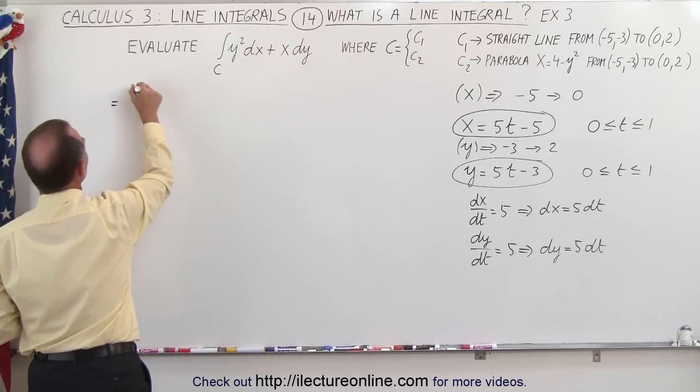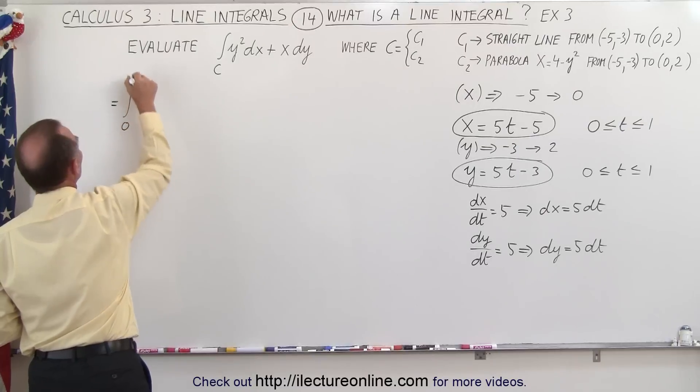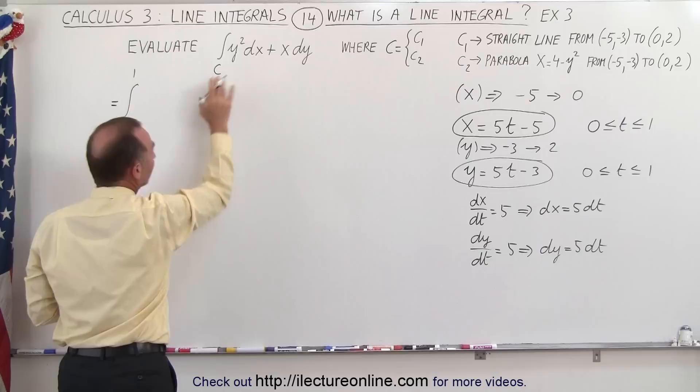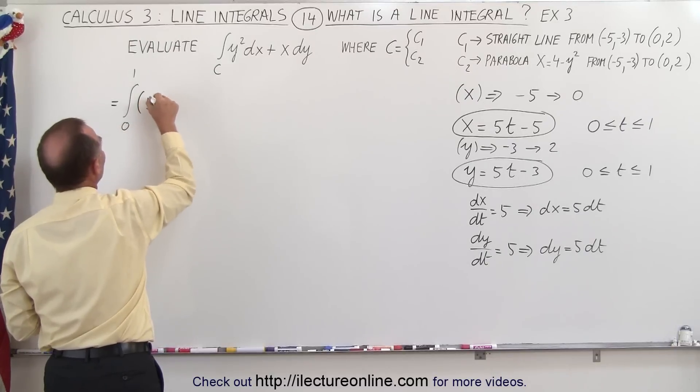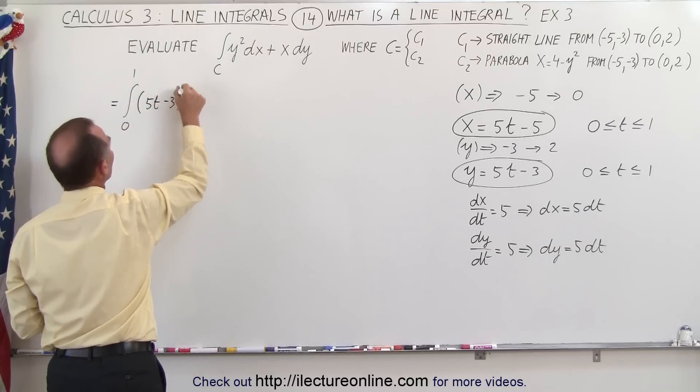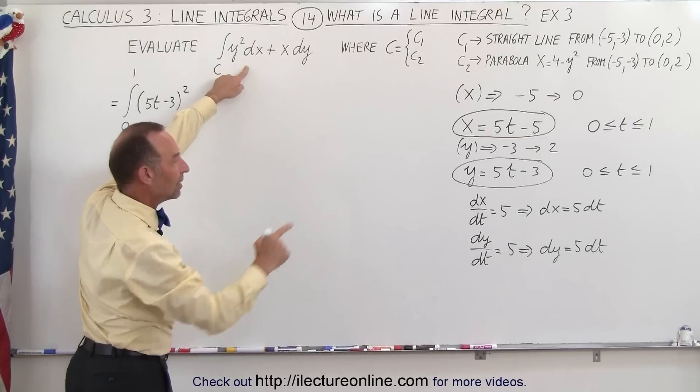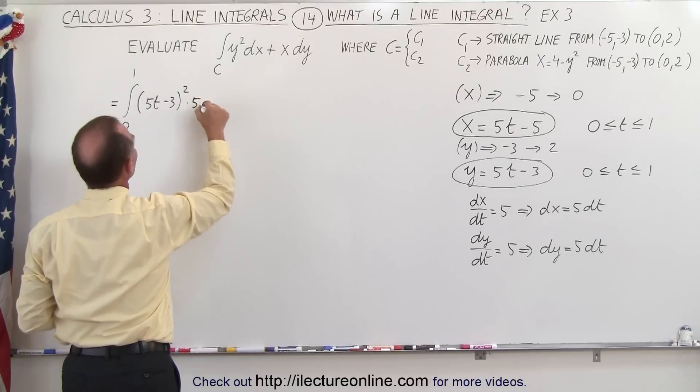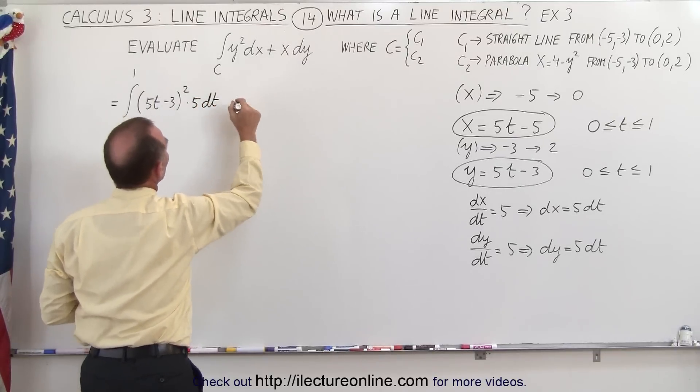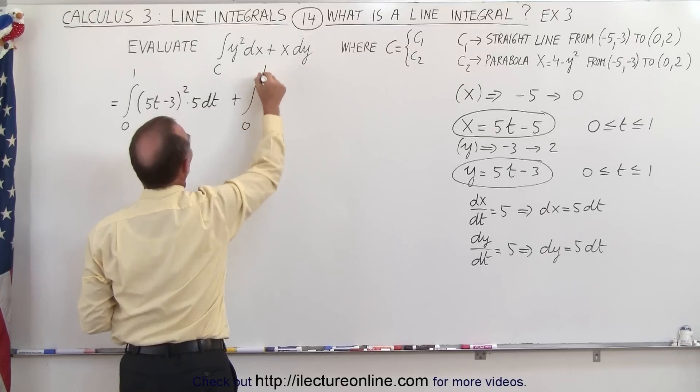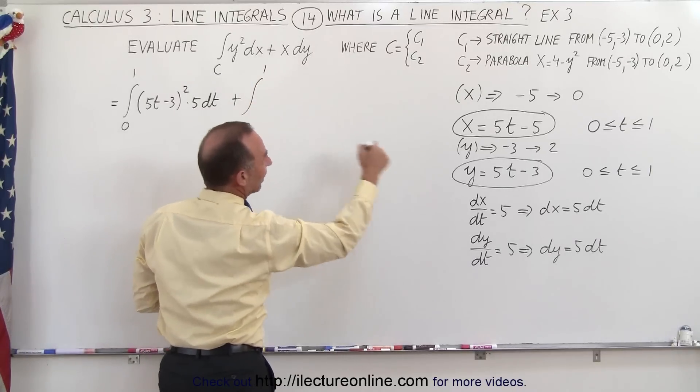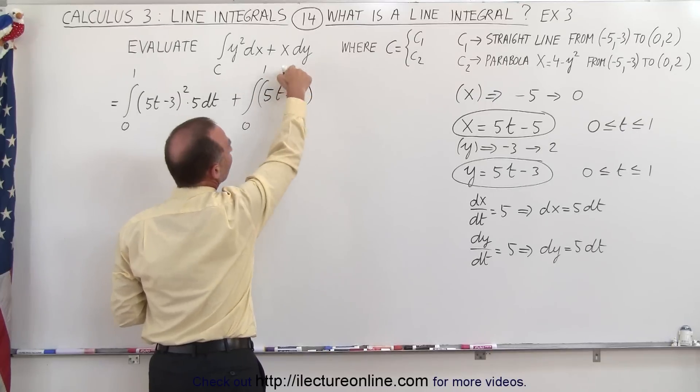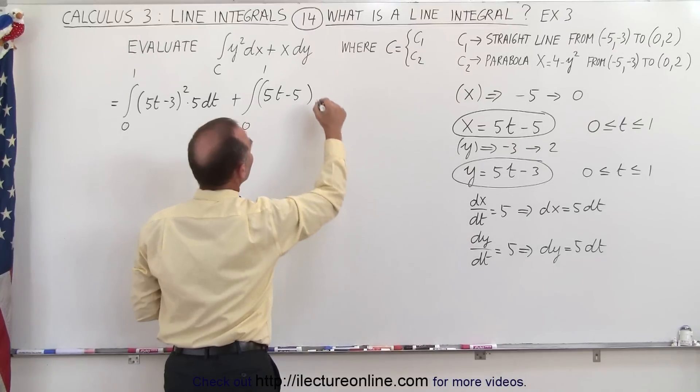So this can now be written as the integral from 0 to 1, because that's the variable t, the limits for variable t of y squared, that would be the quantity 5t minus 3 squared, times dx, and dx is equal to 5 dt times 5 dt. I'll separate this with a second integral, plus an integral from 0 to 1 of x, and x is 5t minus 5, and dy is going to be 5 dt.